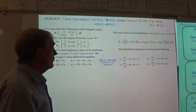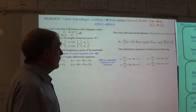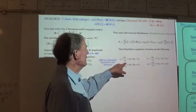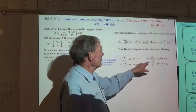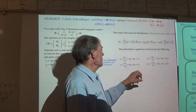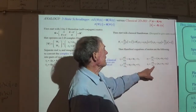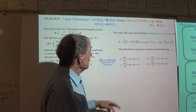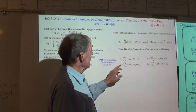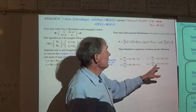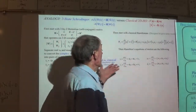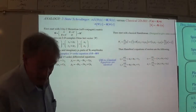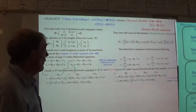If you take the Hamiltonian equations of motion and take the partial derivative with respect to P1 and X1, then P2 and X2 — with minus signs on that one — you then get X1-dot, X2-dot, P1-dot, P2-dot, and lo and behold they are the same equations.